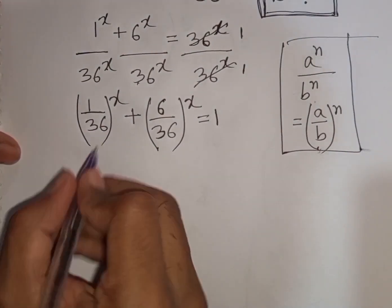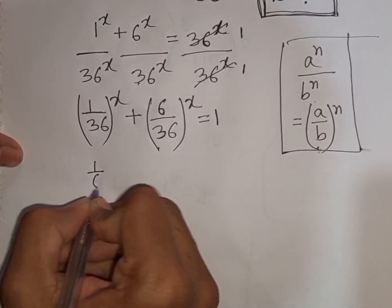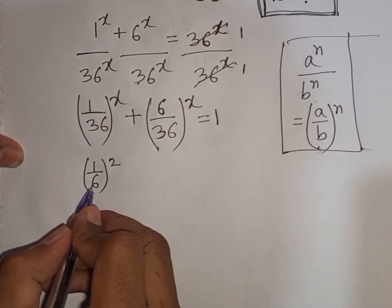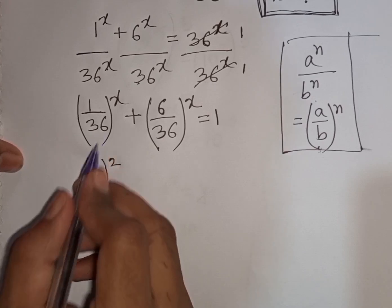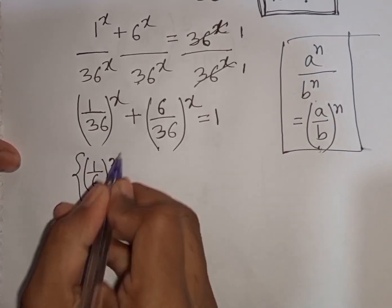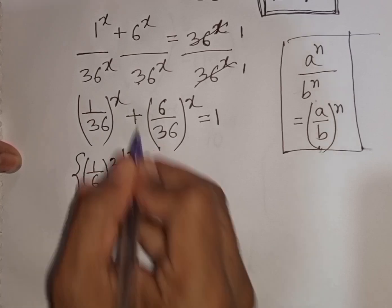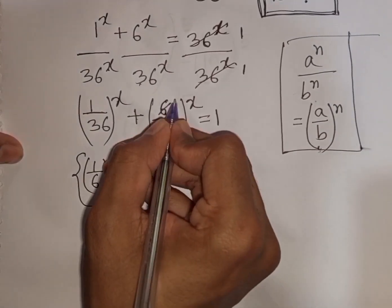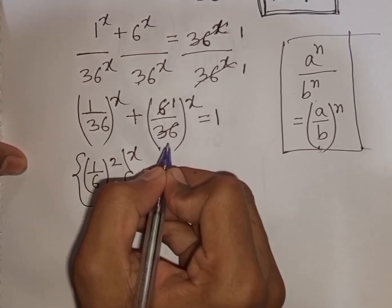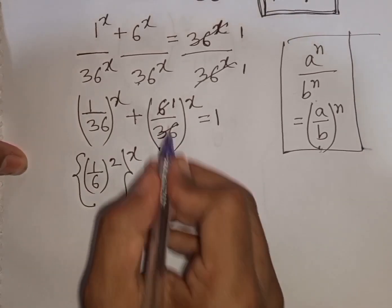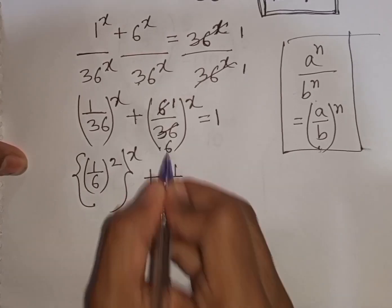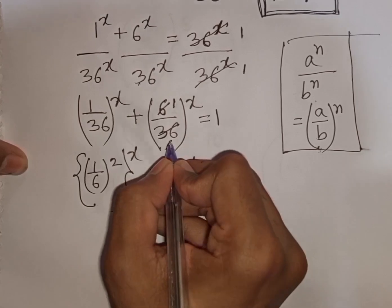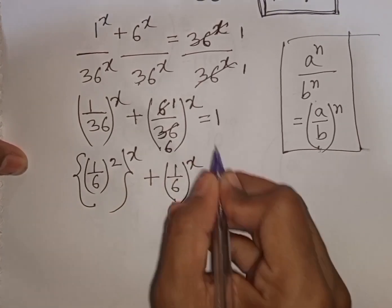Now, 1/36 can be written as (1/6)^2, since 1² = 1 and 6² = 36. So the first bracket can be written as the second bracket to the power of x. And 6/36 simplifies to 1/6. So we have (1/6)^x = 1.